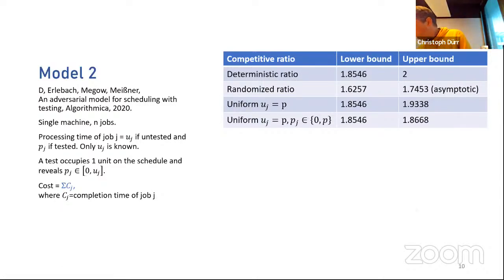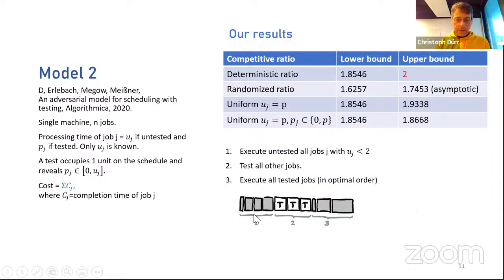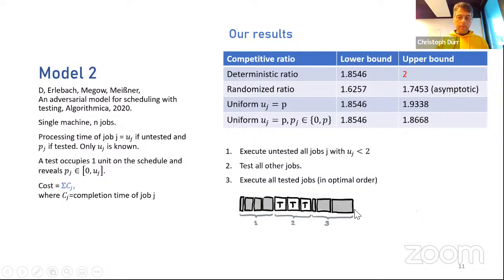Let me explain how to get ratio 2, which is very easy. First, execute untested all jobs j for which uj < 2. Then for all jobs with uj ≥ 2, test all of them — you now know their processing times — and execute them in optimal order. A simple analysis shows the cost is at most twice the optimum cost.